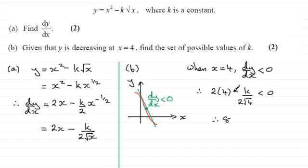In other words, we've got 8, minus, and then on the bottom here, root of 4 is 2, 2 2's of 4, so you've got k over 4, must be less than 0.